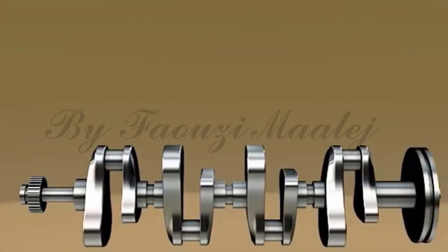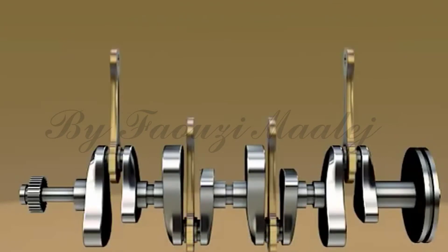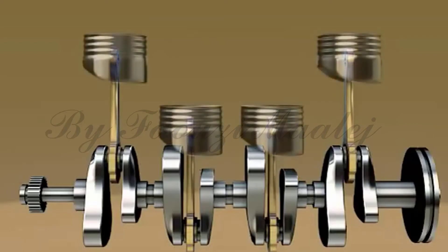Inside the engine block, there is a crankshaft. Piston rods are attached to crankshaft. Pistons are attached to the piston's rods.